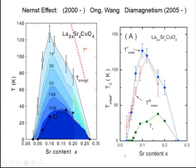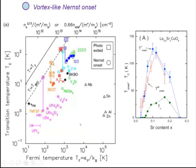The first observation is the Nernst effect onset temperature. I'm showing the original results of the Nernst effect in the 214 system and diamagnetic susceptibility also in the 214 system. Their onset temperature is very high — much higher than actual TC, about a factor of four higher on the underdoped side — but also significantly lower than T*.